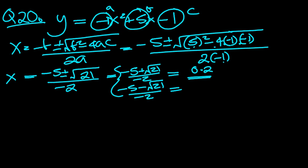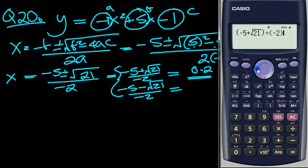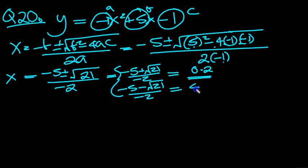And then the other one. Just toggle back then, and change that plus root 21, to a minus. See what we get then. We get 4.79, so it's going to be 4.8, isn't it, to 1dp.